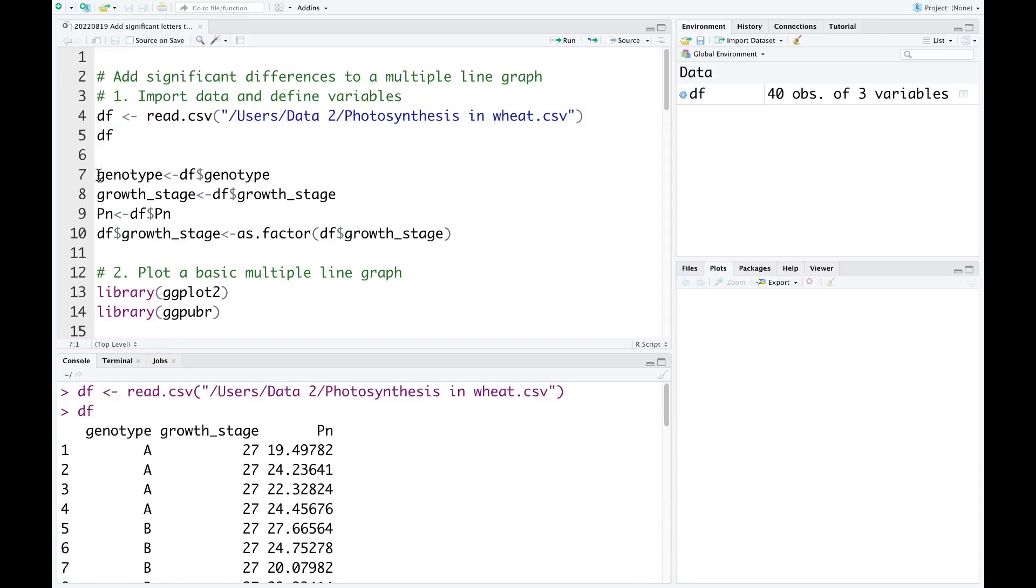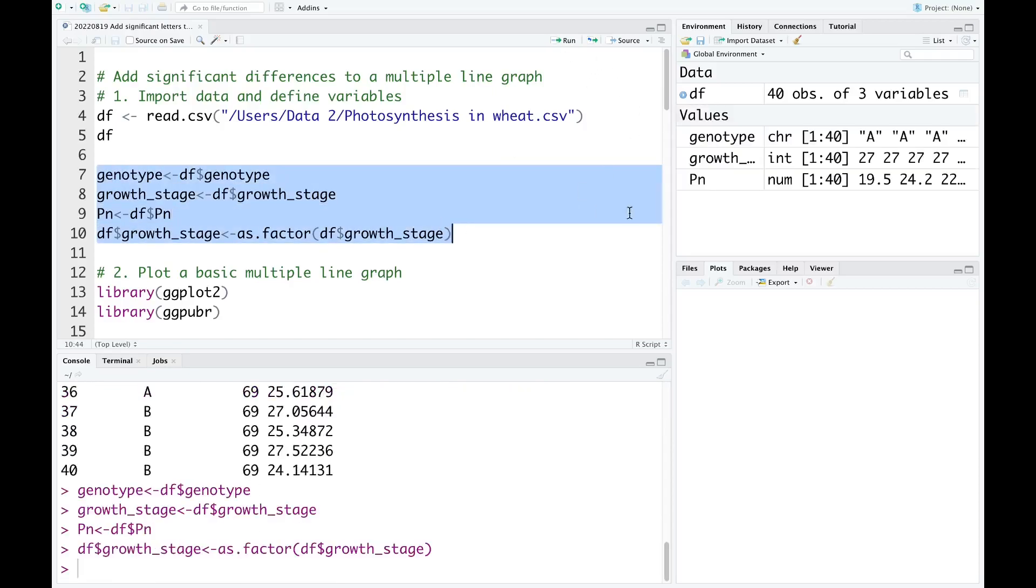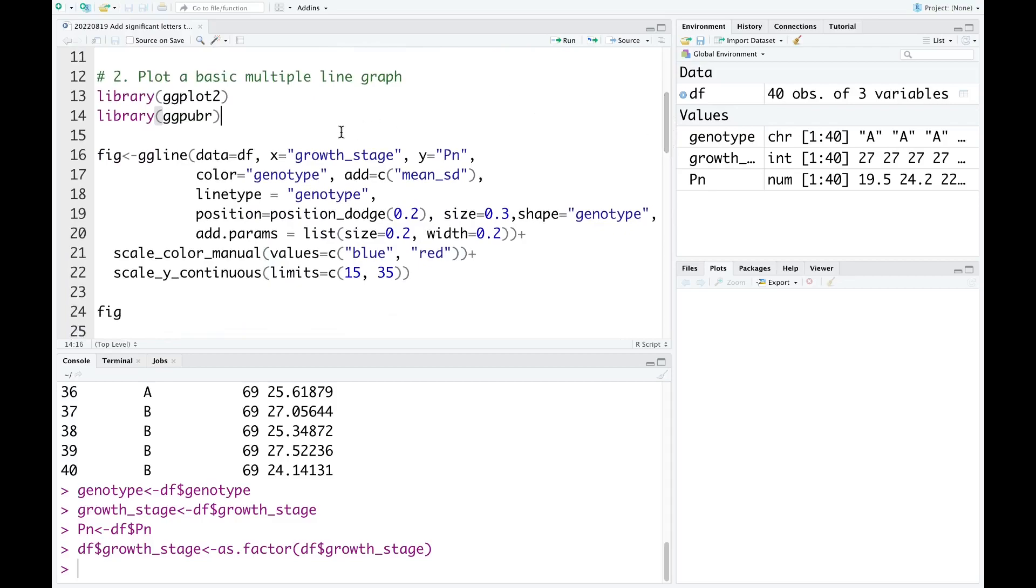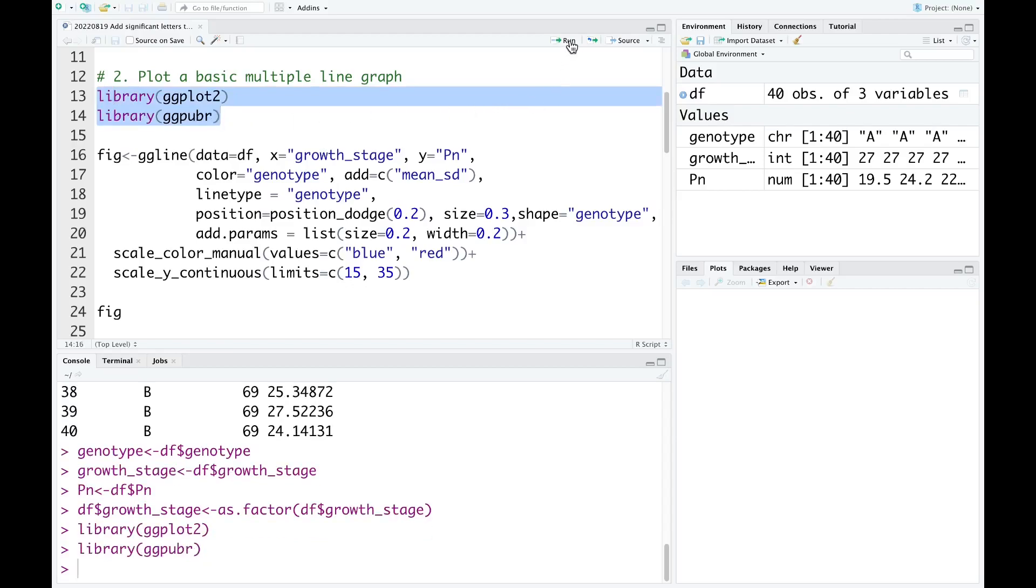Now I'm going to divide variables and convert the growth stage into a factor. After that, we can start to draw a basic multiple line graph. We need to use two packages, ggplot2 and ggpubr. And then we can plot the line graph using ggline.